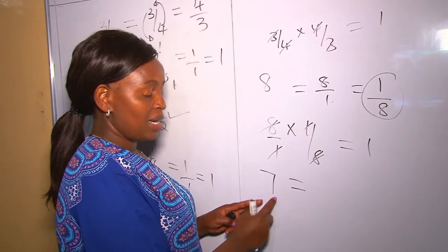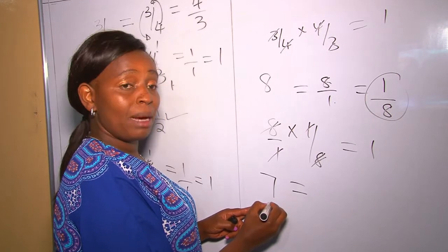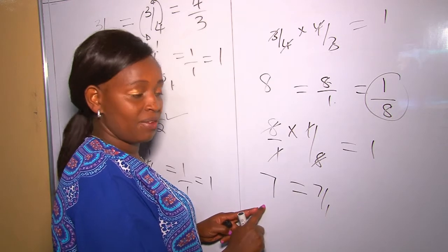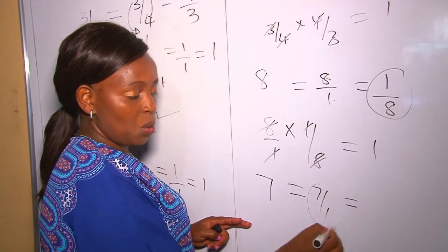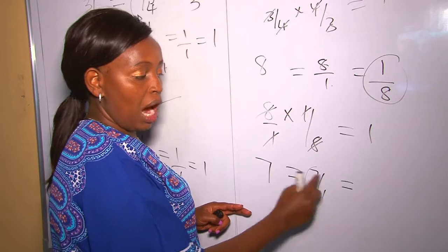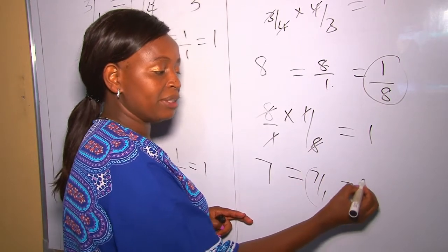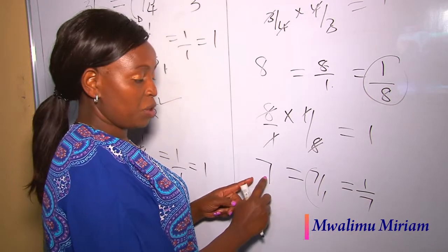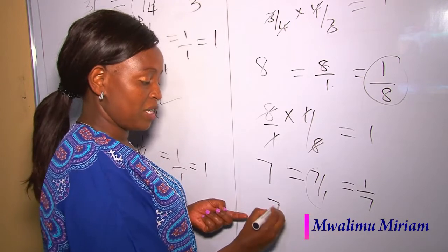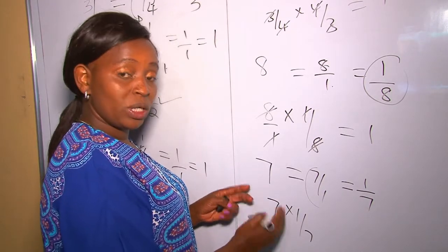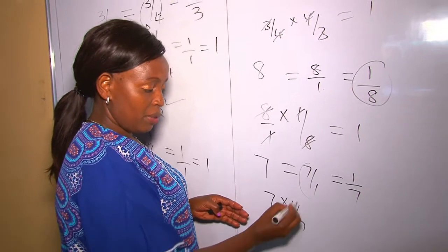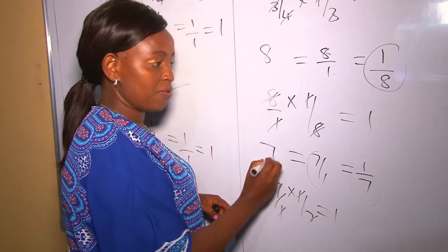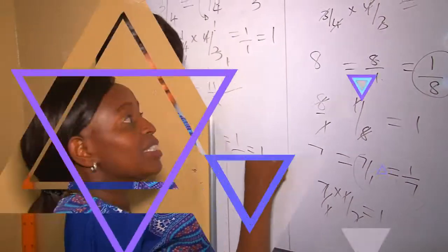Seven being a whole number, its denominator is one because seven divided by one is still seven. Therefore we get our reciprocal: the numerator seven goes down and the denominator one comes up. The reciprocal of seven is one over seven. You can prove it: seven multiplied by one over seven — cross multiplying you get one. Therefore one over seven is the reciprocal of seven.